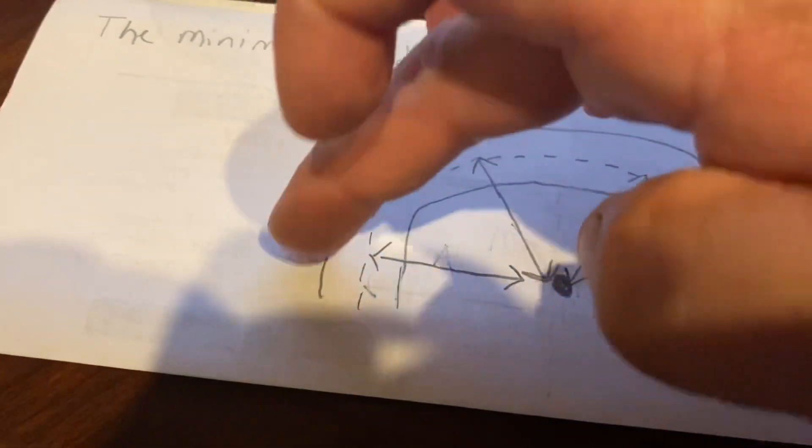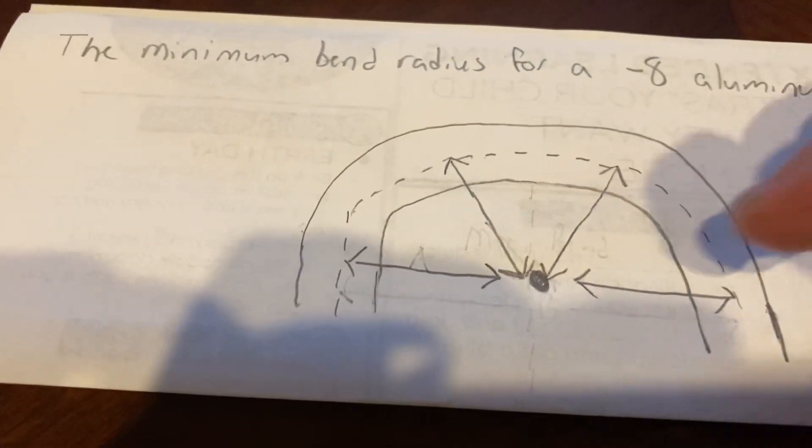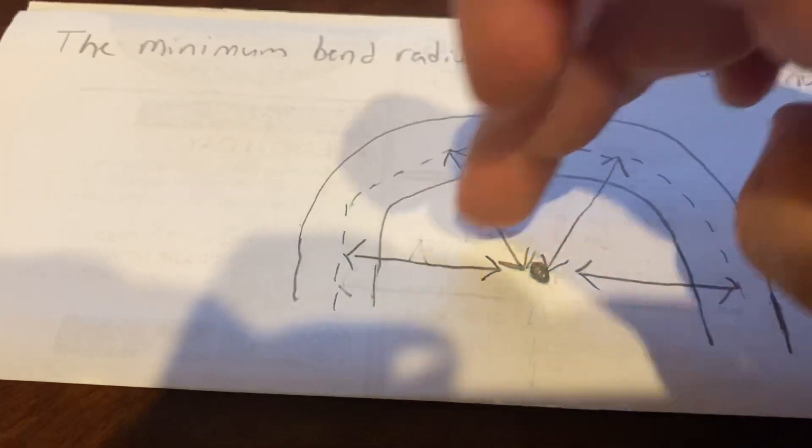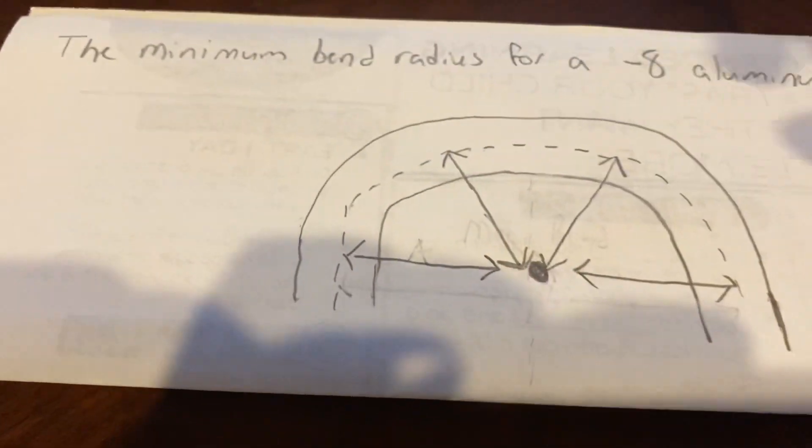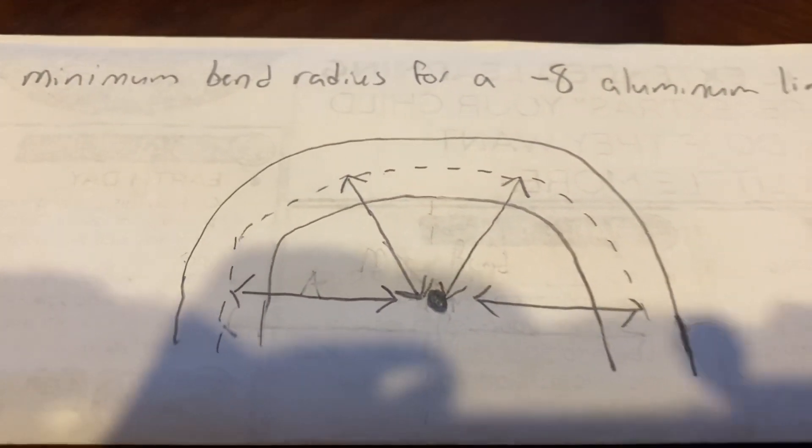I can be greater than that, which would make this bend less sharp. But I can't be any tighter than that. So if I bent this more in or tighter, then I would have exceeded the minimum bend radius.